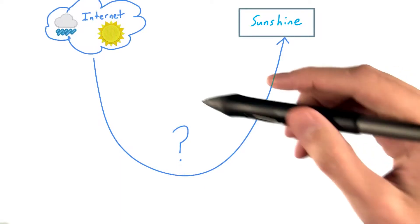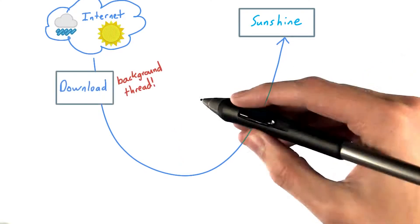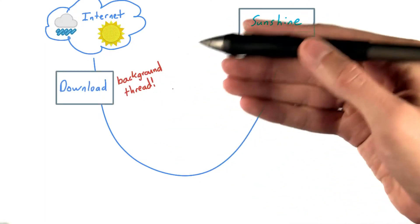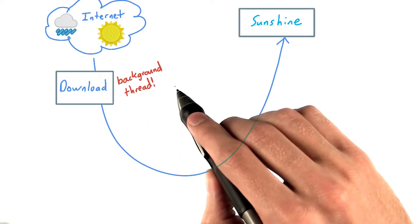So what actually goes into getting images from the Internet onto the screen in your app? Well, there's a networking part to actually download the images. Can't do that on the main thread, so we'll have to use a background thread.